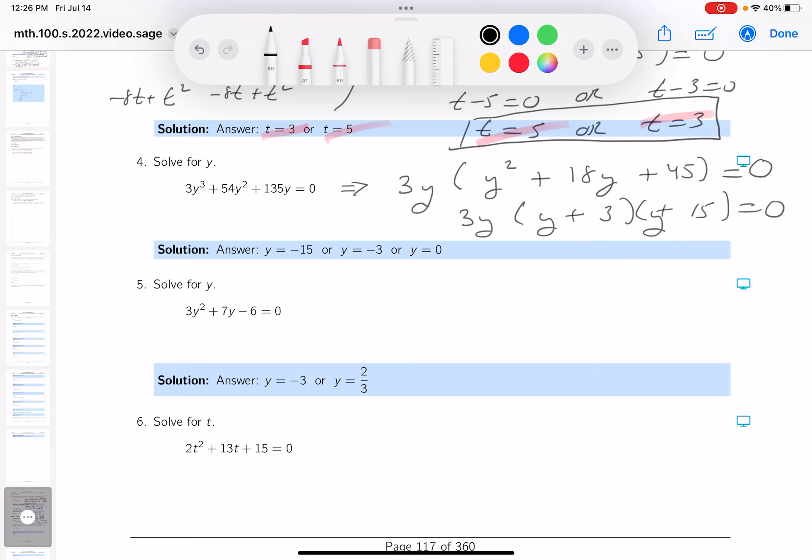Of course, you should check that. But the bottom line is what I'm going to do now, set the factors equal to zero. So 3y is equal to zero. I'm going to use a comma. Just simply say y plus 3 is equal to zero. Another comma, y plus 15 is equal to zero.